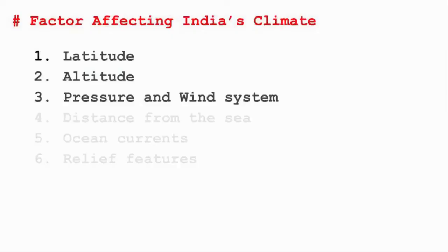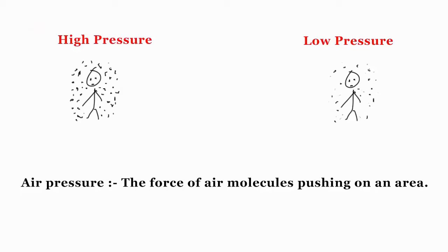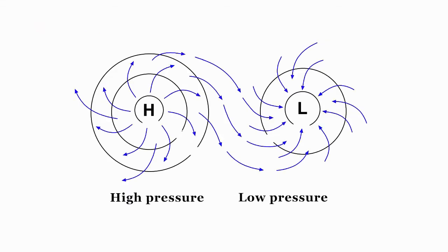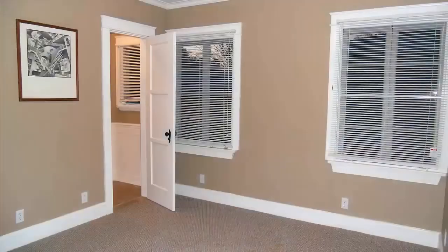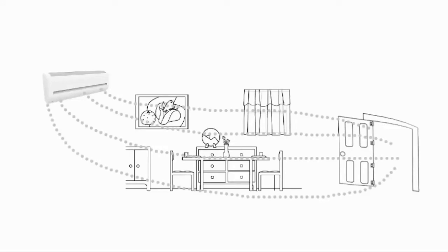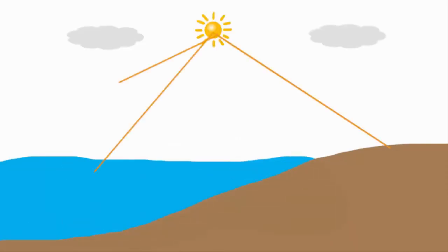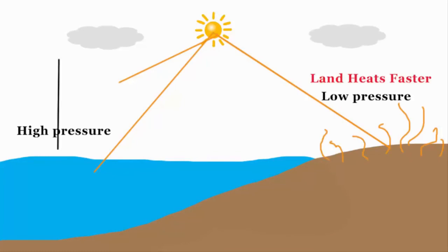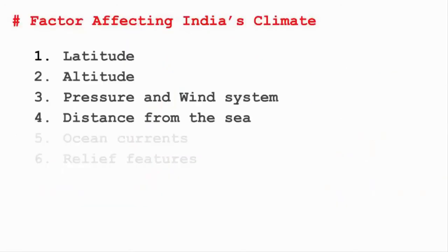The third factor is pressure and wind system. By pressure, we mean high and low pressure systems. Air moves from high pressure to low pressure areas. For example, switch on the AC in your room and leave the door open — you will feel the cool air going out because the environment outside is warm and it attracts the cool air molecules towards it. Land mass gets heated faster than water bodies, and due to that, a low pressure zone is created at the land surface, which attracts cool air molecules from the sea or ocean, causing rainfall and changes in temperature.